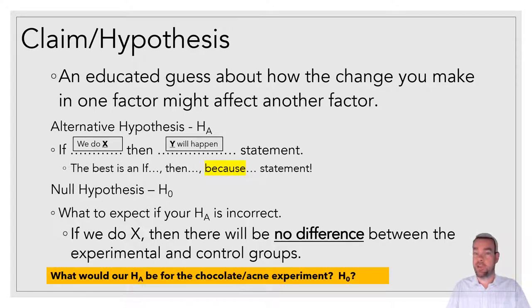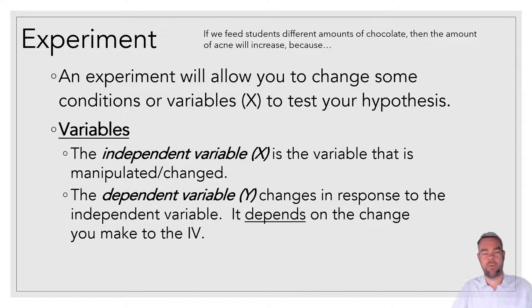So with our chocolate acne experiment, think for a minute and write down what your alternative and null hypotheses would be. Okay, hopefully you paused the video and came up with your hypotheses. For our alternative hypothesis, it's going to be if we feed students a differing amount of chocolate, then the amount of acne will increase because, well, we would hopefully come up with some scientific concept as to why it would cause acne.